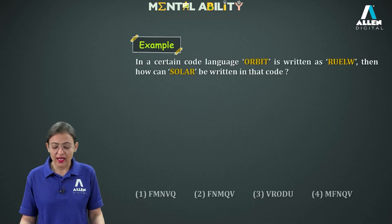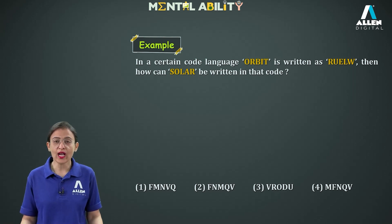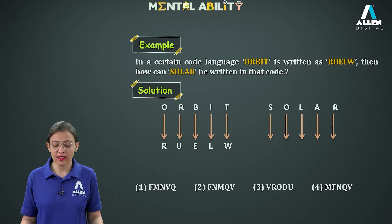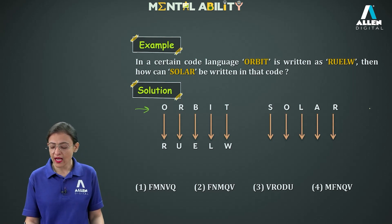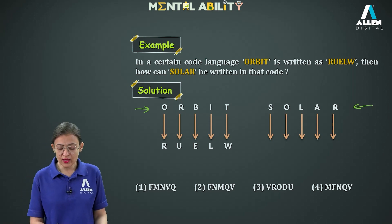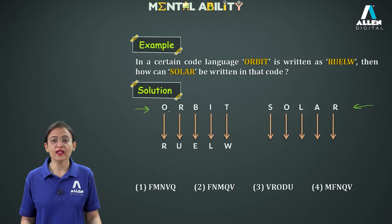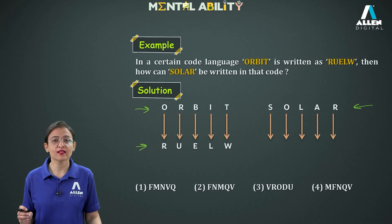Moving to the next one. In a certain code language, ORBIT is written as R, U, E, L, W. How can SOLAR be written in that code? The letters of ORBIT and SOLAR are not the same, so no direct coding. The letters of ORBIT and its code are also not the same, so no reordering of letters. Therefore, movement of letters is taking place.